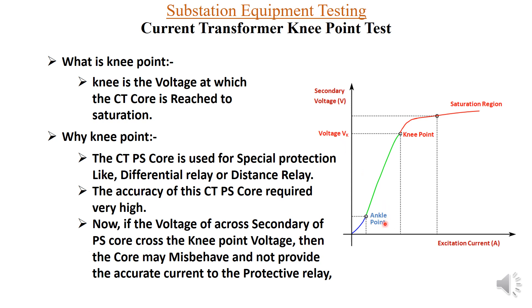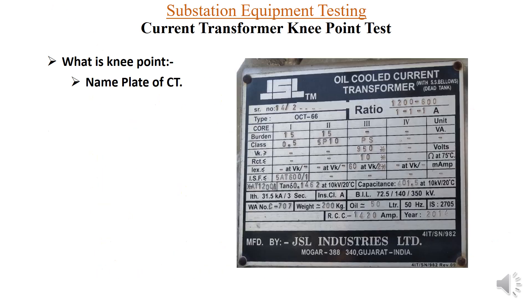We also have an ankle point on this graph. The ankle point is used for the metering core, while the knee point is very important for the PS core, which is the special protection core.